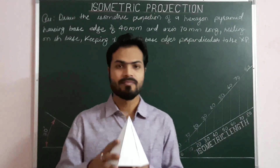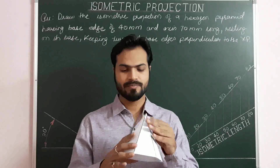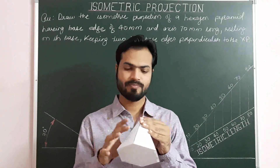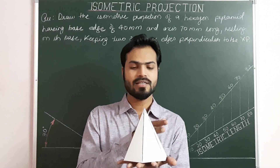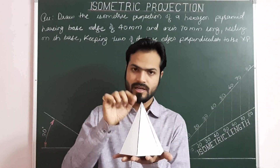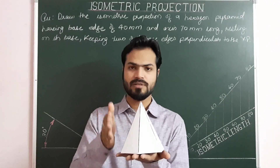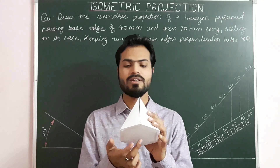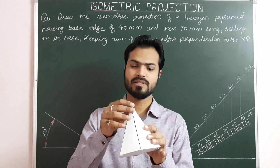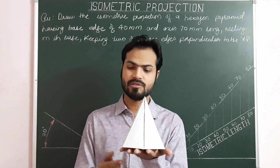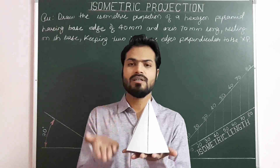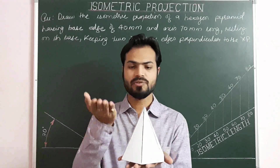As you can see, it is a hexagonal pyramid. It has a hexagonal base of size 40 mm and six identical triangular faces meeting at the apex. Now, we know that in the case of pyramids, the axis is a line joining the center of the base to the apex, and it is always perpendicular to the base. Here, the length of the axis — or you can say the height of the pyramid — is given as 70 mm.